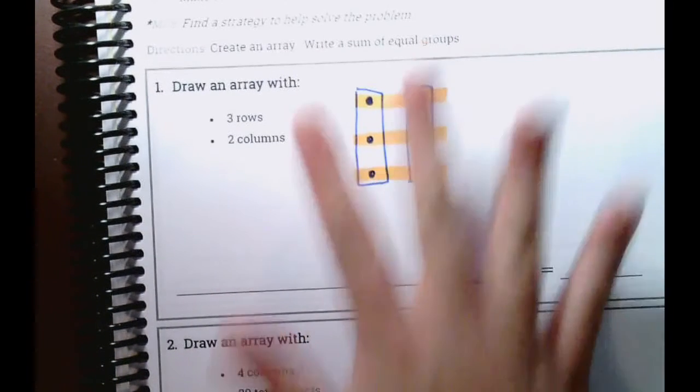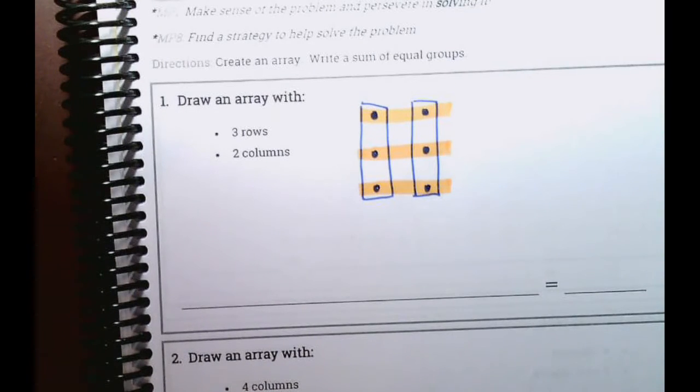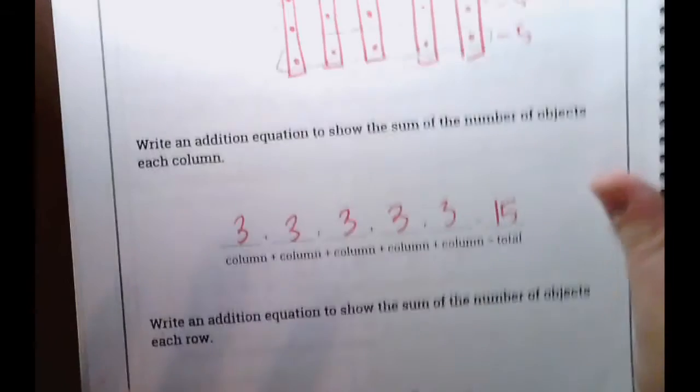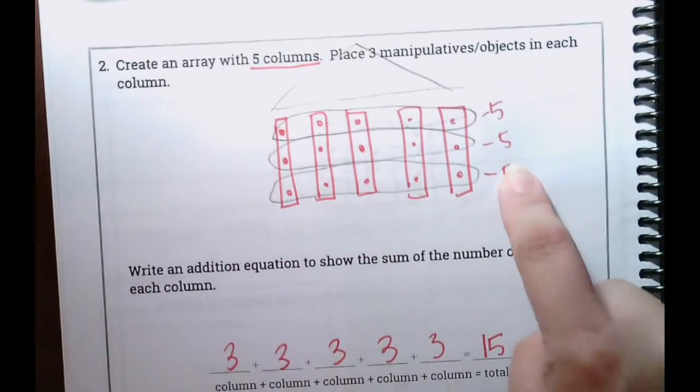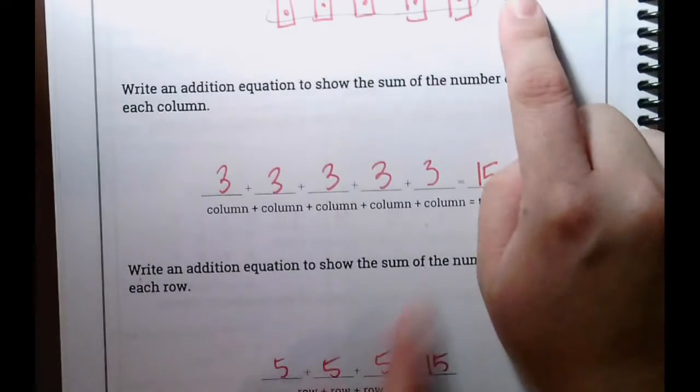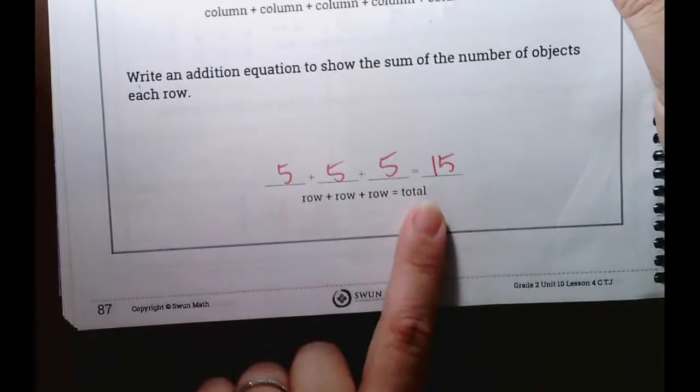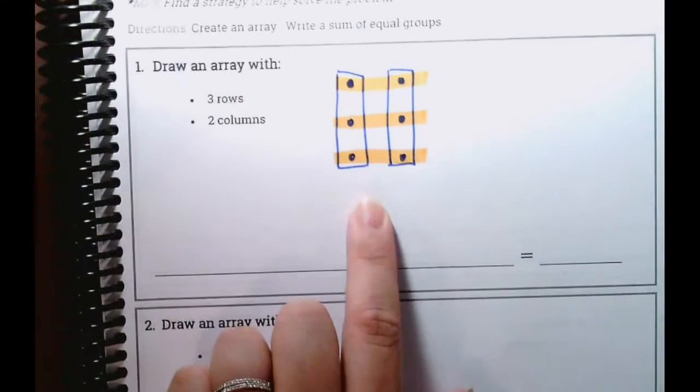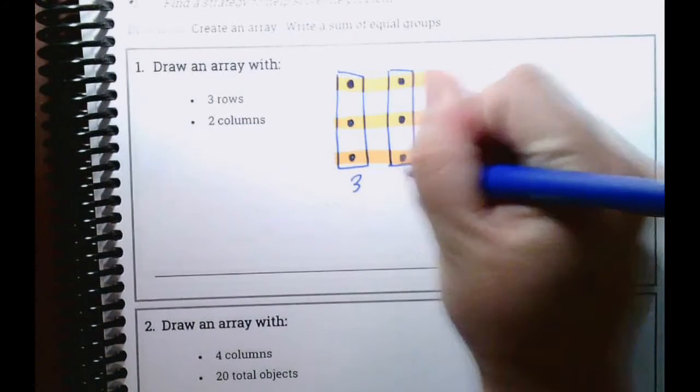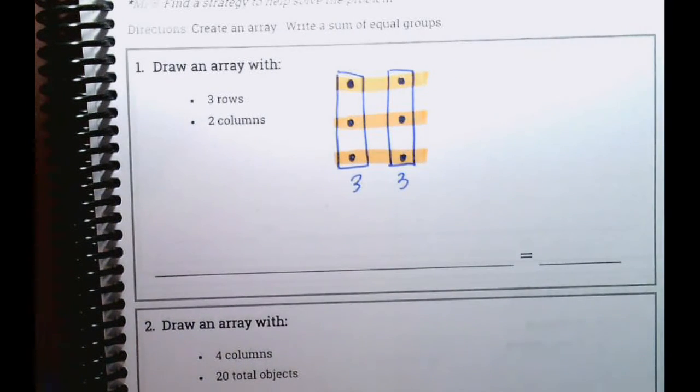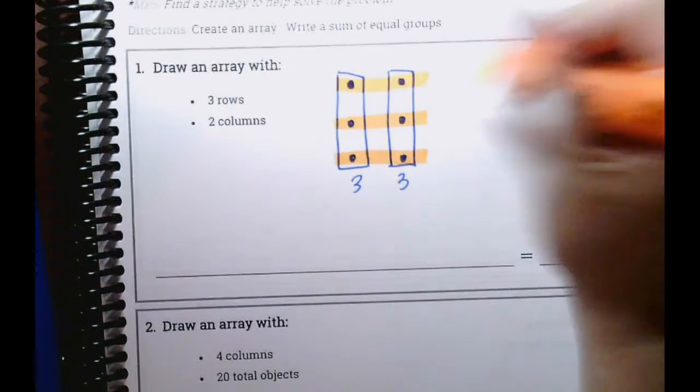All right. So now that we have our array, we need to write a sum of equal groups. So what equations can we write? Let's look back to yesterday's lesson. We wrote a couple of options for our addition sentences, right? So we took however many columns we had and added them together. Or we added how many items were in each row and added them together. So let's do that today. Here in our columns, we have three items, three and three. Or you can write your columns. How many are in each column? Two.